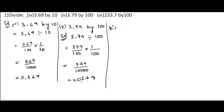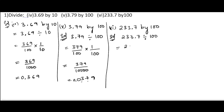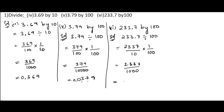Next, sixth problem: 233.7 by 100. We write 233.7 divided by 100. We remove the decimal to get 2337 by 10. We change the sign and write the reciprocal of 100, that is 1 by 100. So 2337 ones are 2337, and 10 into 100 is 1000. Since we have three zeros in the denominator, we put the decimal after three digits, giving us 2.337.